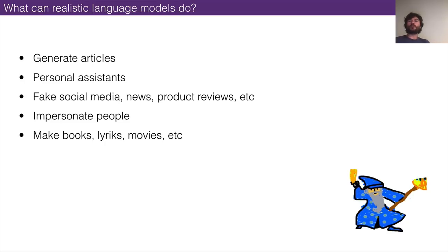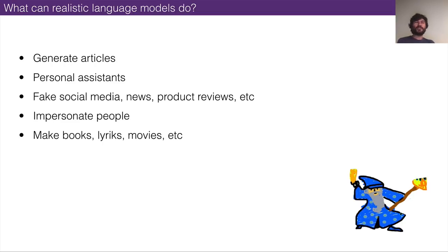What should we expect these language models to be doing in our future? They're going to be generating articles, acting as personal assistants — you'll have language-speaking personal assistants, like duplexes that can call pizza restaurants and order for you. But they also have purported malicious applications: generating fake social media bots, fake product reviews, generating trolls online, impersonating people, making books, lyrics, movies, and so on.